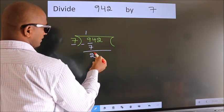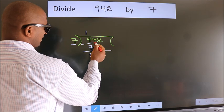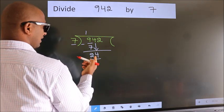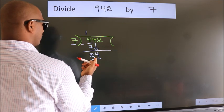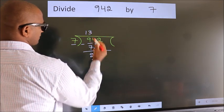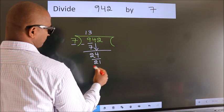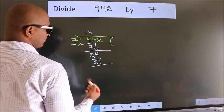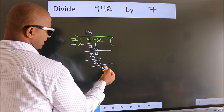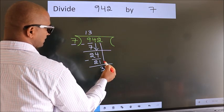After this, bring down the beside number. So, 4 down. So, 24. A number close to 24 in 7 table is 7 threes 21. Now, we subtract. We get 3. After this, bring down the beside number.